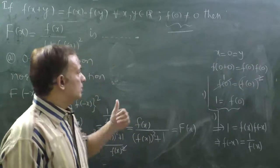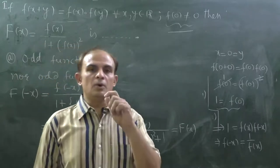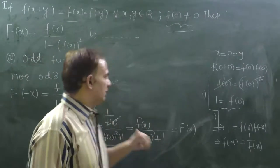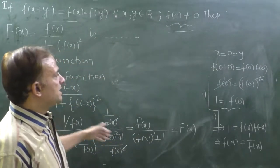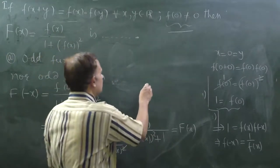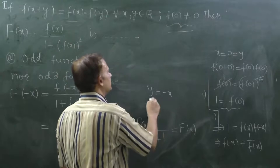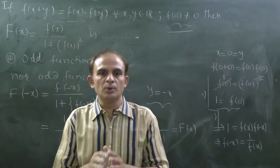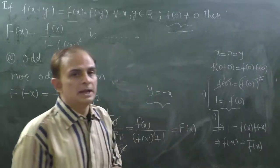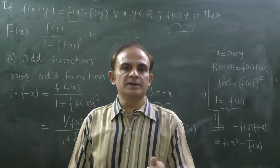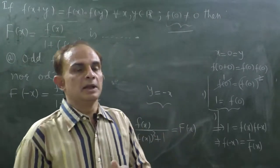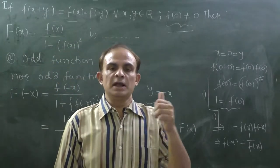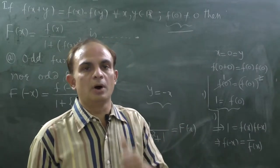So friends, you saw the solution and how tricky this question is. Three conditions had to be applied: first, the condition for an even function; second, putting y = -x; and third, finding f(0). Hope you liked this solution. Please like, share, and subscribe to my channel. For more solutions to typical problems, remain with us. Best wishes, all the best!